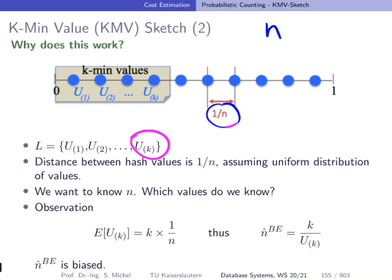Why is this working? What is this value? It's uK—the k smallest value from our values that we store. But can we estimate how large uK is? Well, if the distance between these individual blue points—our values hashed into 0 and 1—is 1 divided by n, and we are interested in the k smallest of these, then uK can be estimated as k times 1 divided by n.